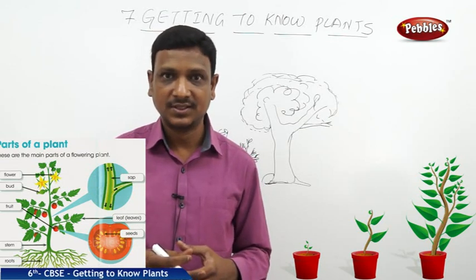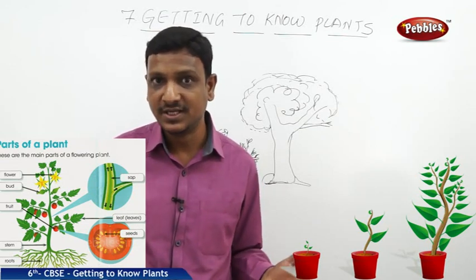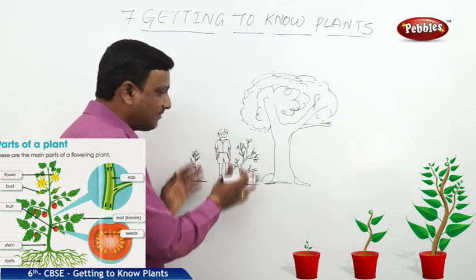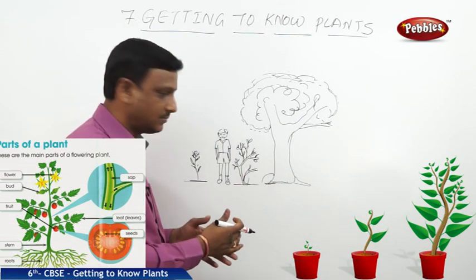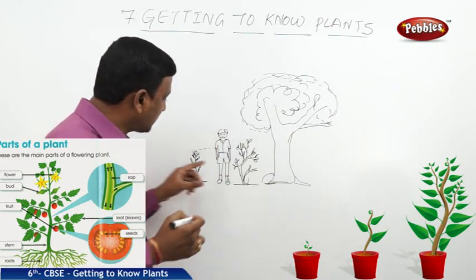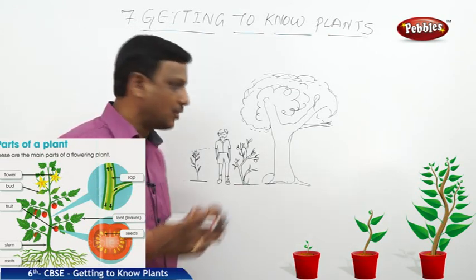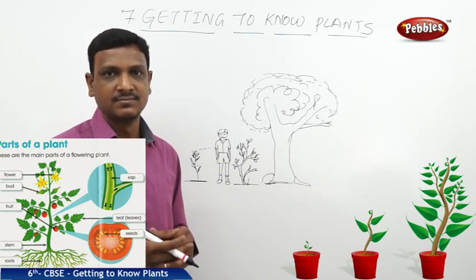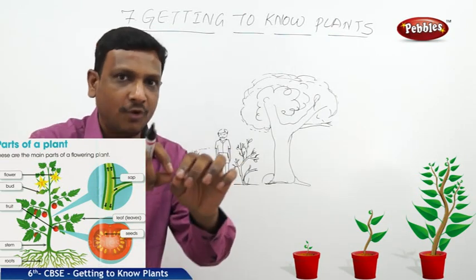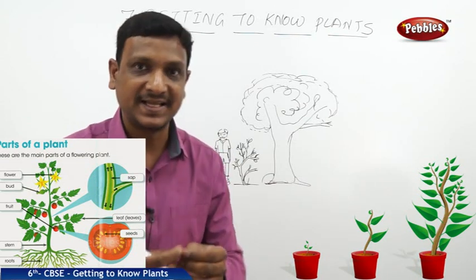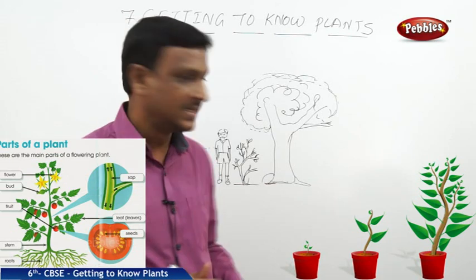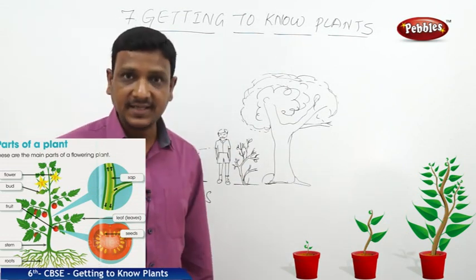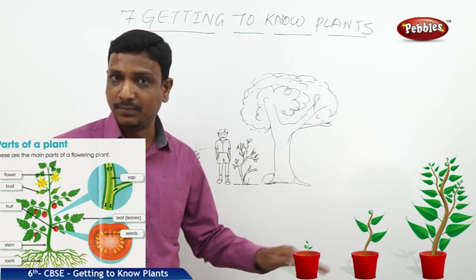When talking about the size of a plant, you need to compare it with yourself. You are here, and you have some plants or trees around you. There is a small plant beside you which is smaller than you. You observe it — it's very small, very thin, and the stem is very tender. If you apply a little force to bend it, it may break. Such tender plants are called herbs.